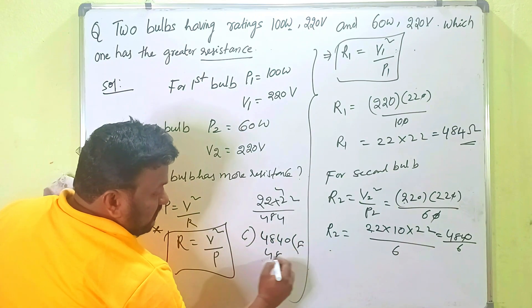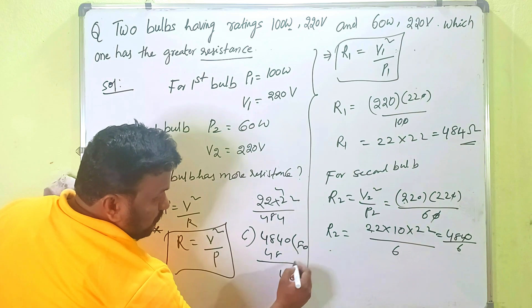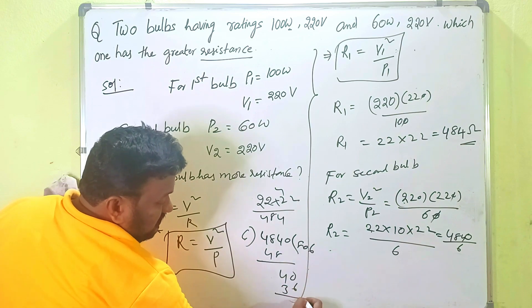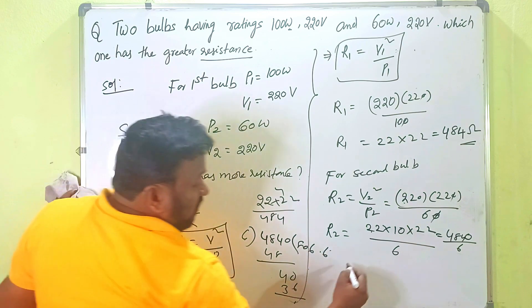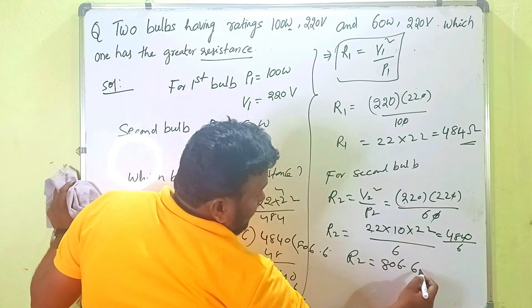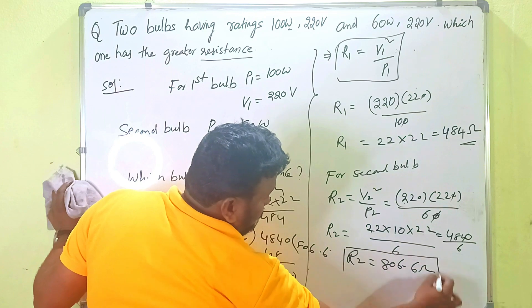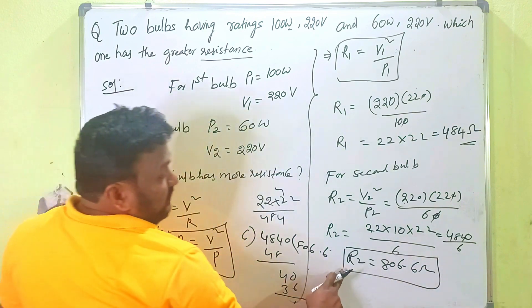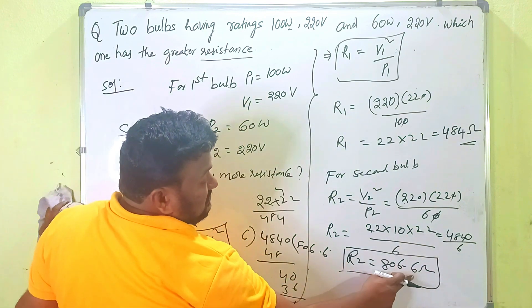So here we are going to get 4840. 6 into 8 is 48. Again 40, 36. Then R2 is what, children? 806.6 ohms. So children, R2 is equal to 806.6 ohms.